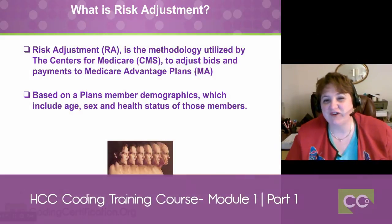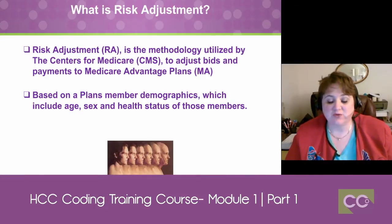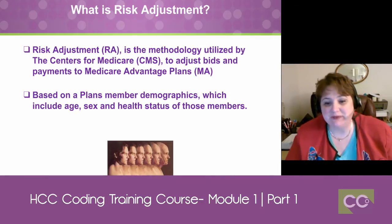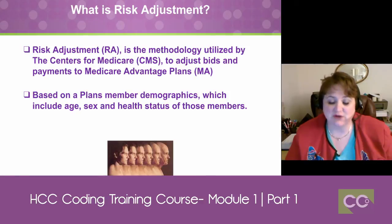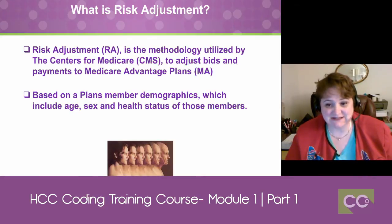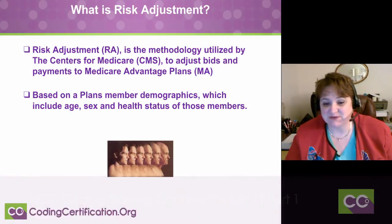First, let's talk about what Risk Adjustment is. Risk Adjustment is abbreviated as RA. It's the methodology utilized by the Centers for Medicare, which is called CMS, to adjust bids and payments to Medicare Advantage plans, which are called MAs, based on the plan's member demographics, which include age, sex, and health status of those members.